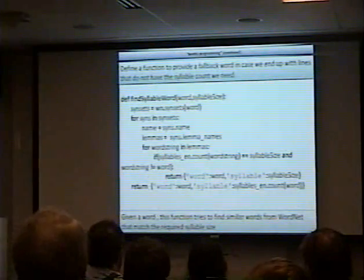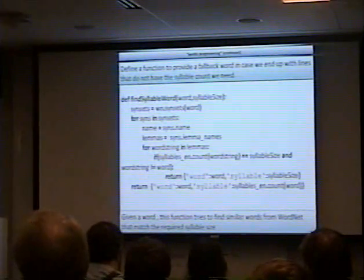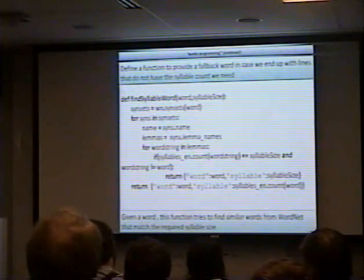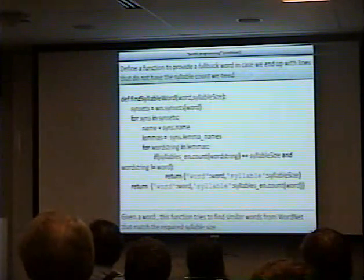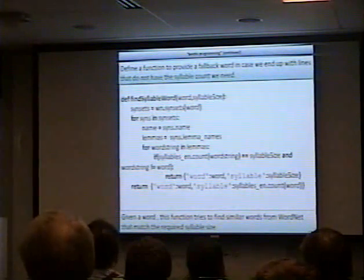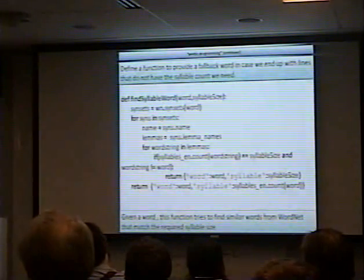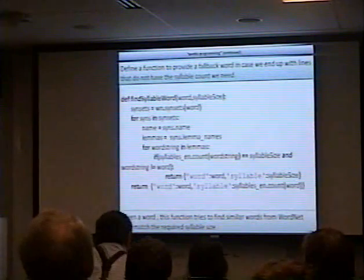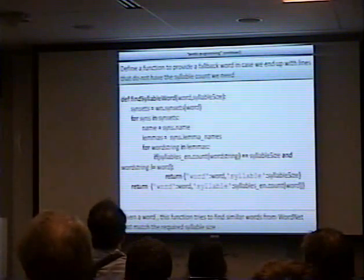Here we're going to define a function that is kind of a fallback. This is going back to what was said earlier about it actually finding haikus in text. This basically doesn't go into the text to find certain patterns of words that occur in sequence like a haiku. What this does is it starts from the beginning, goes all the way to the end, and as soon as it encounters something that is not of the right syllable count, it'll throw it into this function, which will try to look through WordNet and give us another word with a similar meaning that may fit the syllable count.